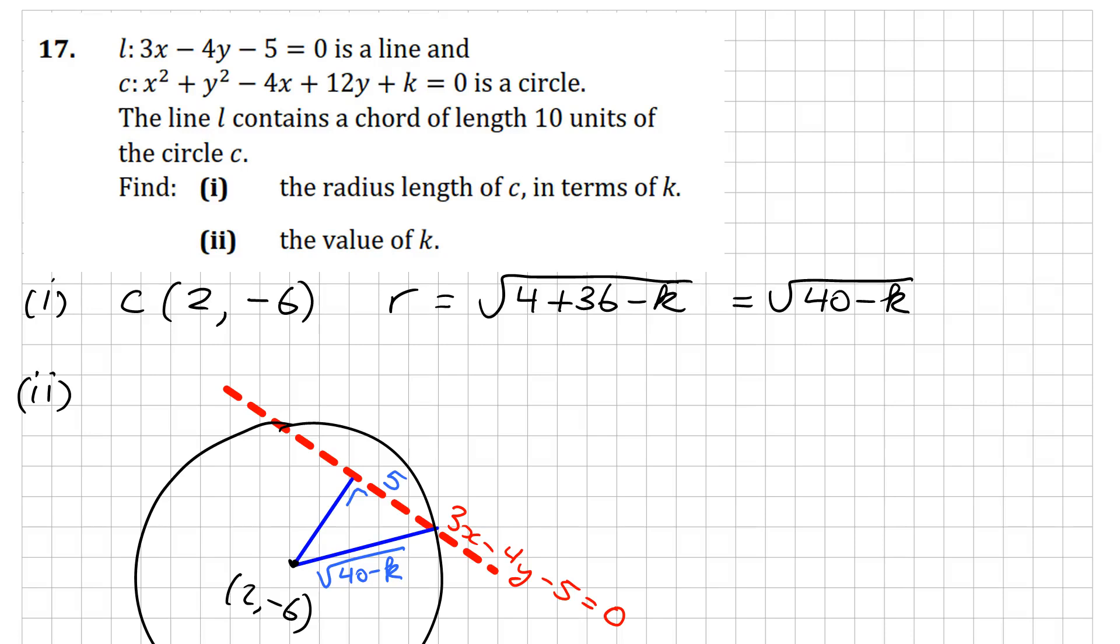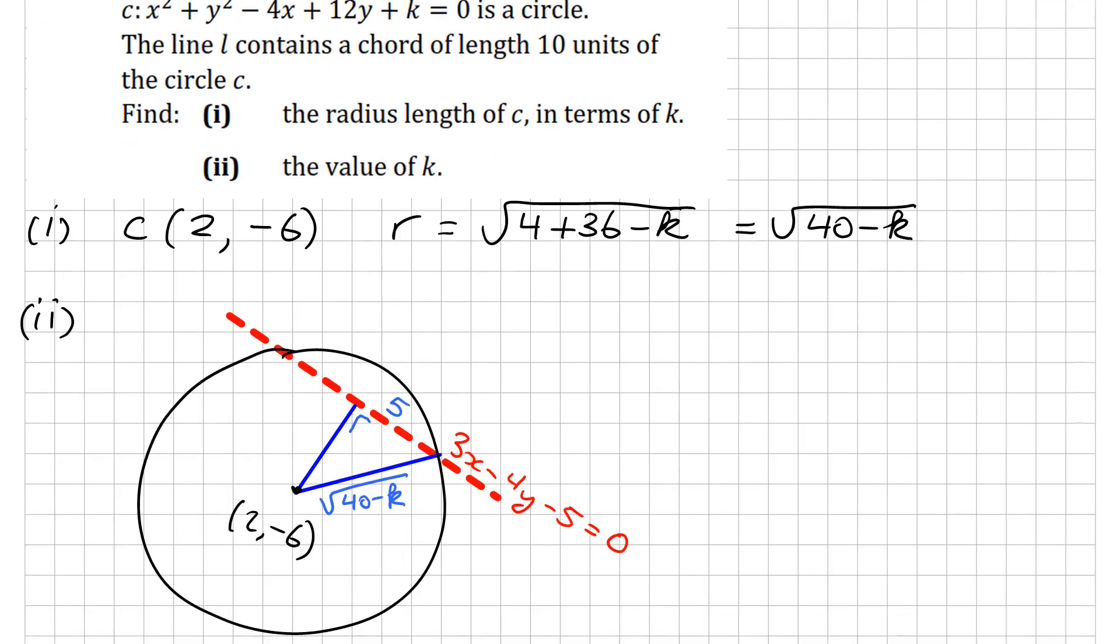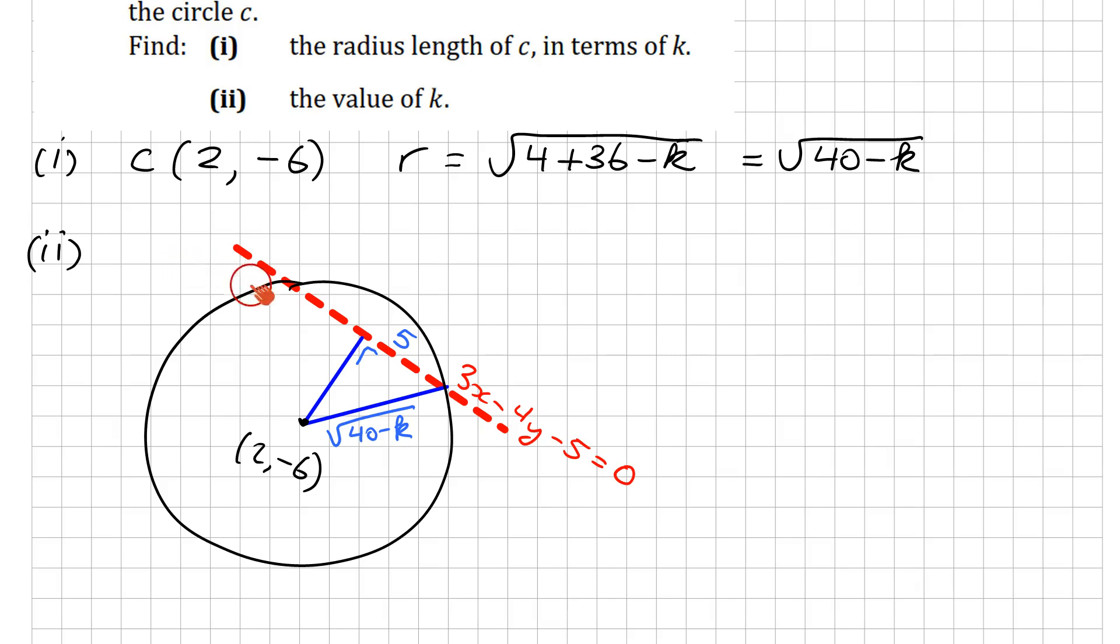Okay, so to finish off question 17, this time we were given a chord that went to the circle. I have my diagram done out here, so my chord here is 3x minus 4y minus 5 in red.